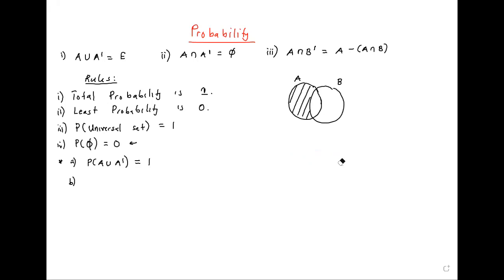The probability of A union A complement — does it mean that since A union A complement is the universal, the probability of the universal is one? The probability of the universal is one. Why? Because it's the total probability — whatever you are studying is in it.